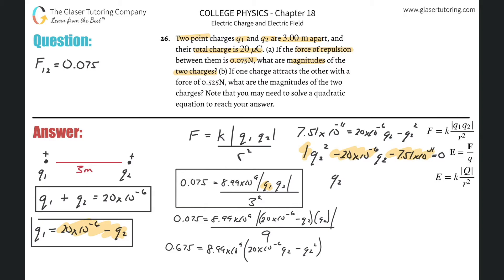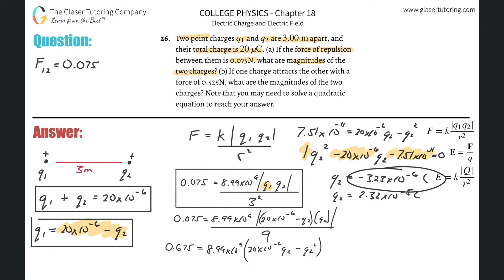Plugging in the values, we get two solutions: Q2 equals negative 3.23 times 10 to the minus 6, or Q2 equals 2.32 times 10 to the minus 5 — both in coulombs. Since we used absolute values in our equation, what matters are the magnitudes. So Q2 is either 2.32 times 10 to the minus 5 or 3.23 times 10 to the minus 6 coulombs.